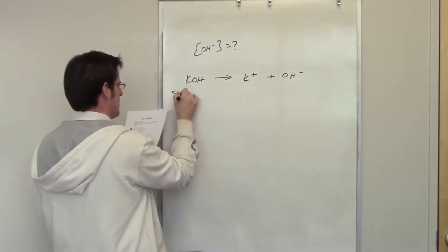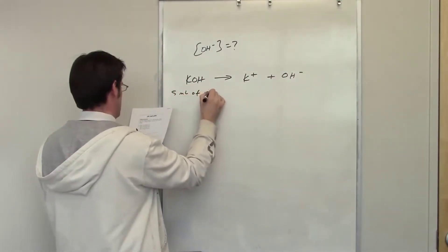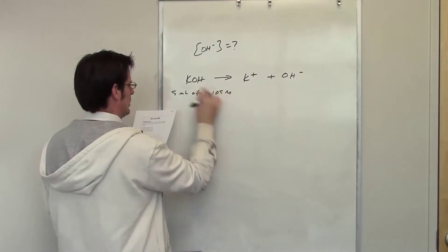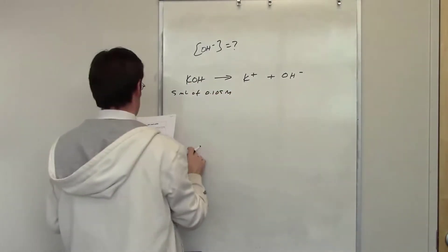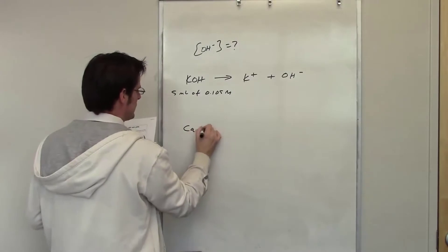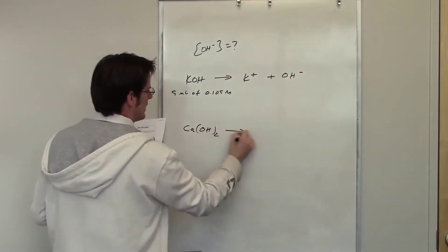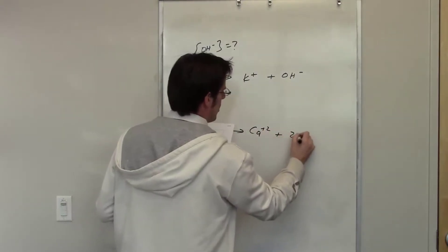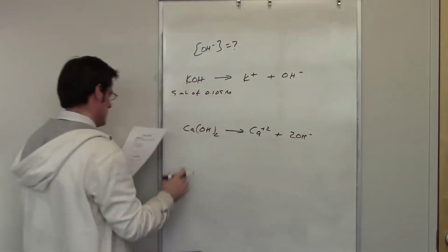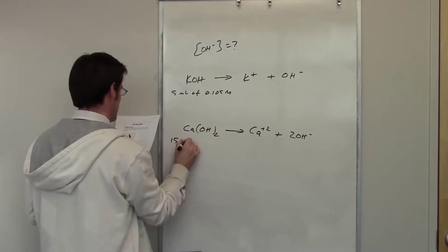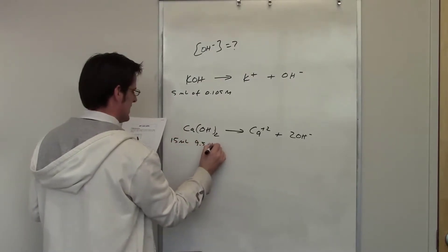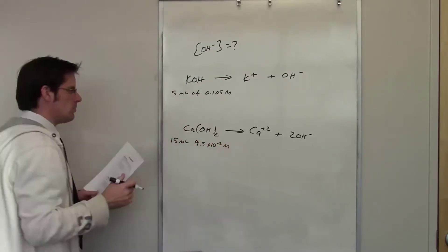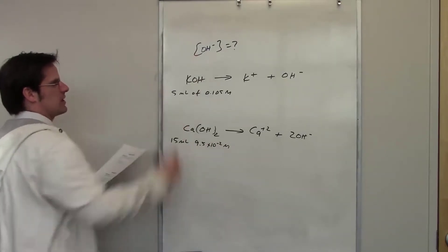It tells us that we've got 5 mL of a solution that's 0.105 molar KOH. It then says separately that in the same vessel we have calcium hydroxide. Calcium hydroxide dissociates to form calcium 2 plus and 2 molar equivalents of hydroxide. How much calcium hydroxide are we adding? Well we're adding 15 mL of 9.5 times 10 to the negative 2 molar.